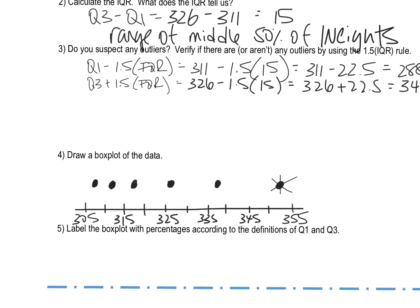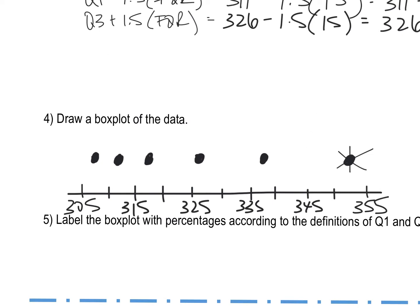And the way that you construct your box plot is you put a box around the Q1 to the Q3, like so. And that represents our IQR. A line goes through the median. And then you extend your whiskers in either direction to the other two dots.